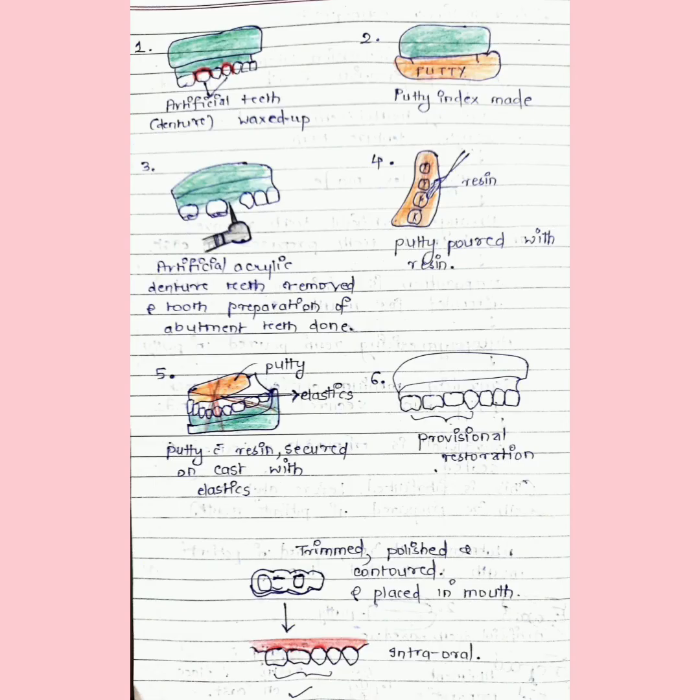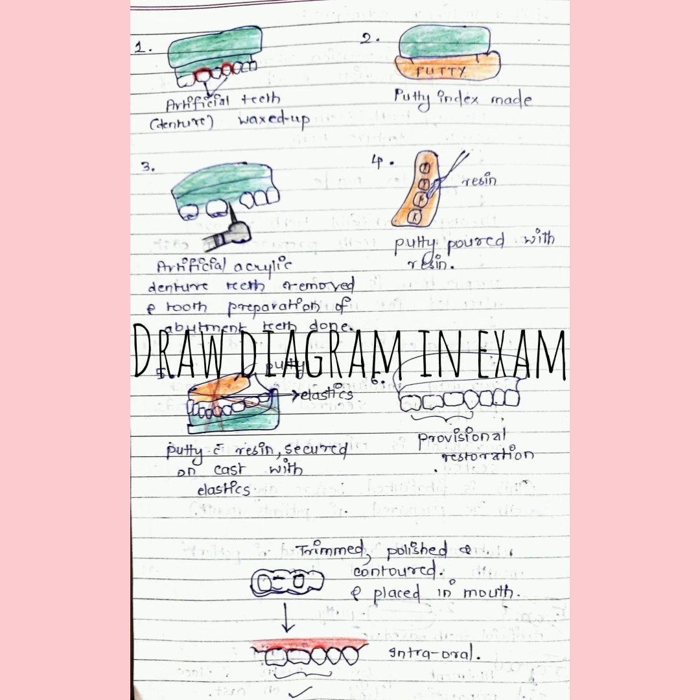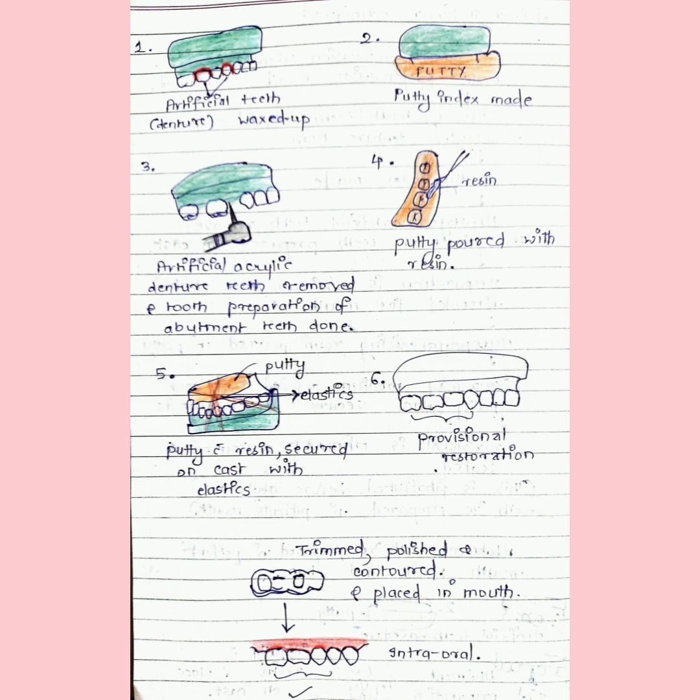You can see this diagram to understand it better. We have a cast with missing teeth, then we replace these teeth with artificial denture teeth by waxing them up. We make a putty, take an impression, remove those artificial teeth, and prepare the tooth or abutments. We pour this putty with the resin. In the fifth image, we secure this putty onto the cast with the help of elastics. In the sixth, we get the provisional restoration, then we trim, polish, and contour them, then place them in the mouth.